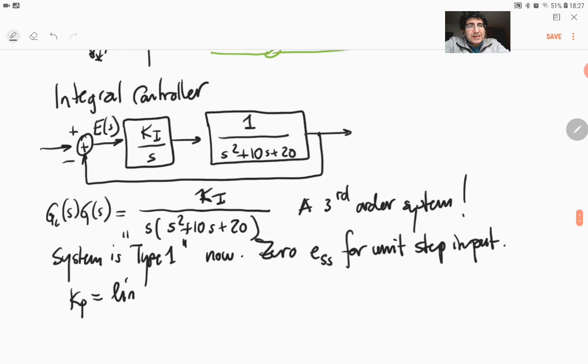Which is defined as limit s goes to zero, gc of s, g of s, and that's going to be as s goes to zero. Because you have this s term at the denominator, this will be actually infinity. And ESS, which is equal to 1 over 1 plus kp, as kp is going to infinity, this is going to go to zero.